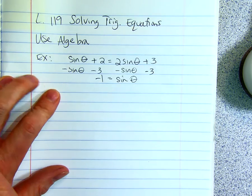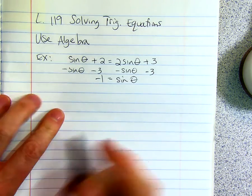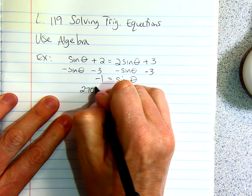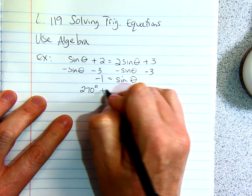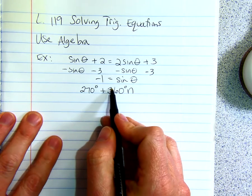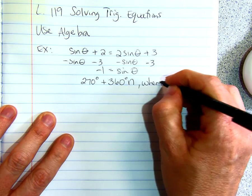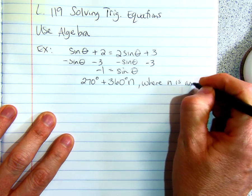So basically you look and you see on your unit circle everywhere where sine is negative 1. And that's at 270 degrees and then every 270 degrees all the way around the circle. So 270 degrees plus 360 N where N is any integer.